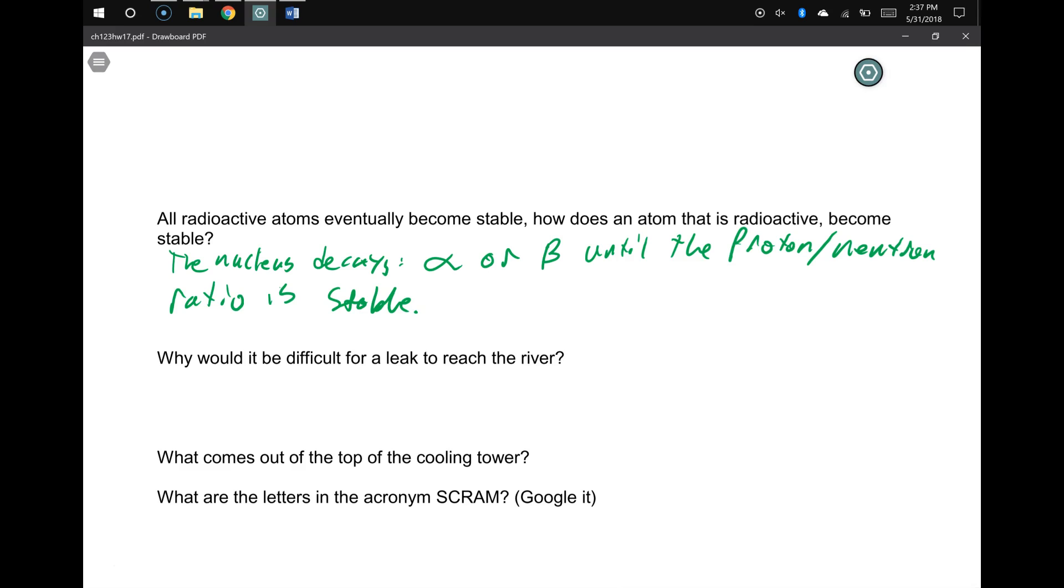Okay, so how come it's gonna be difficult for radiation to reach the river? There are four - physically there are four. Anything else?